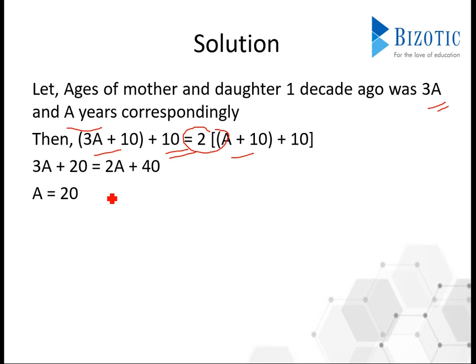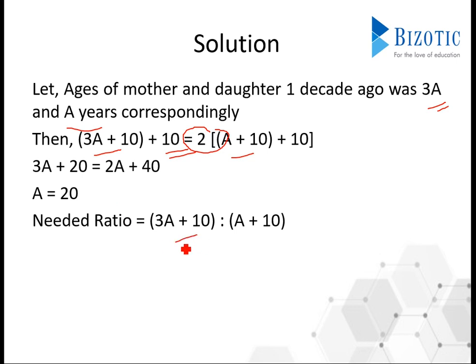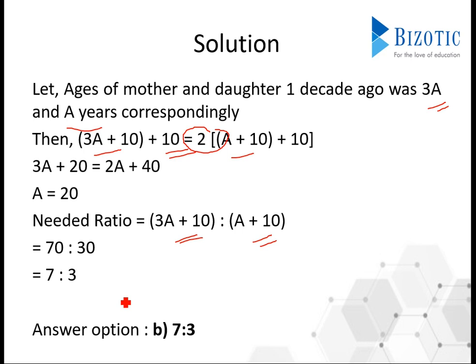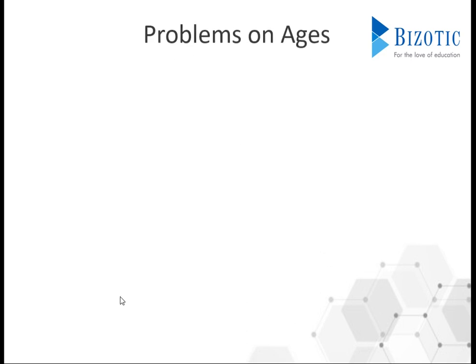With a = 20 as the daughter's current age, we substitute to find the mother's current age. The ratio comes out to 70:30, which simplifies to 7:3. So the right answer is 7 is to 3.